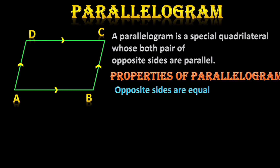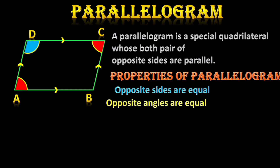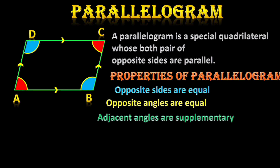What are the properties of a parallelogram? First, opposite sides are equal in length: AB equals CD and AD equals BC. Second, opposite angles are equal. Third, adjacent angles are supplementary — the angles present on the same side of a parallelogram are supplementary.